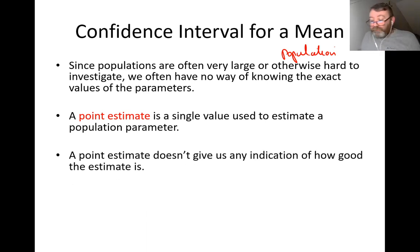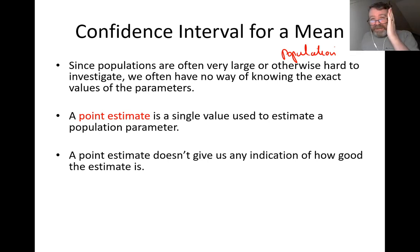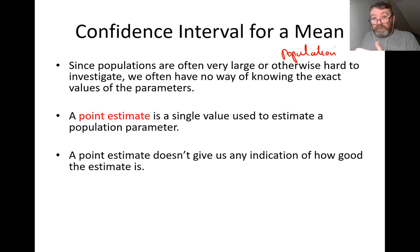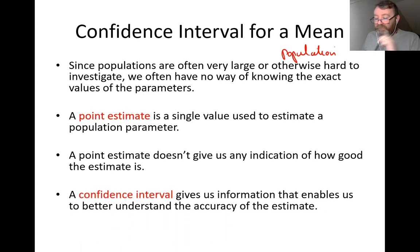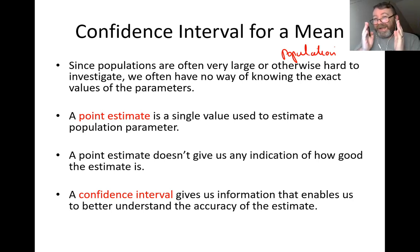A point estimate doesn't give us any indication of how good the estimate is. For example, if I take 20 samples of a thousand people and work out the mean age, I have a number — but it doesn't tell me how accurate that number is relative to the true mean age of five and a half million people. So I bring in what is called the confidence interval, which gives information about the accuracy of that point estimate.